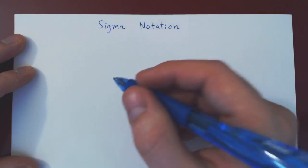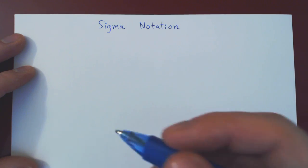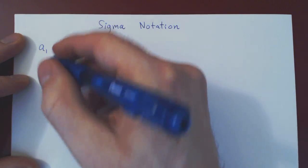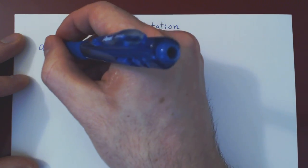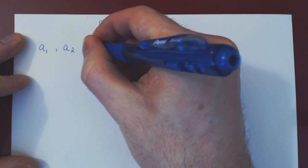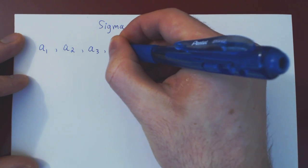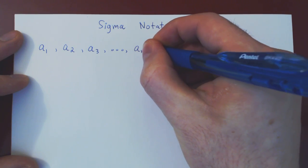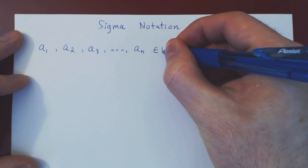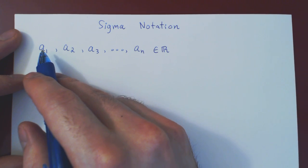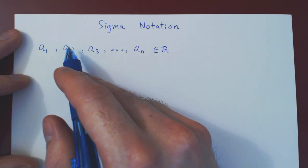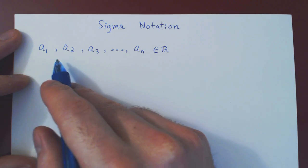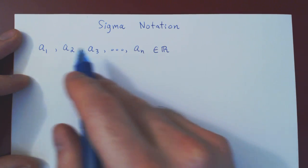Let's look at an example. Suppose we have n real numbers, indexed as a₁, a₂, a₃, up to aₙ. For instance, a₁ could be 5/7, a₂ could be 3/4, a₃ could be negative 1/8 — so n real numbers indexed 1, 2, 3, up to n.